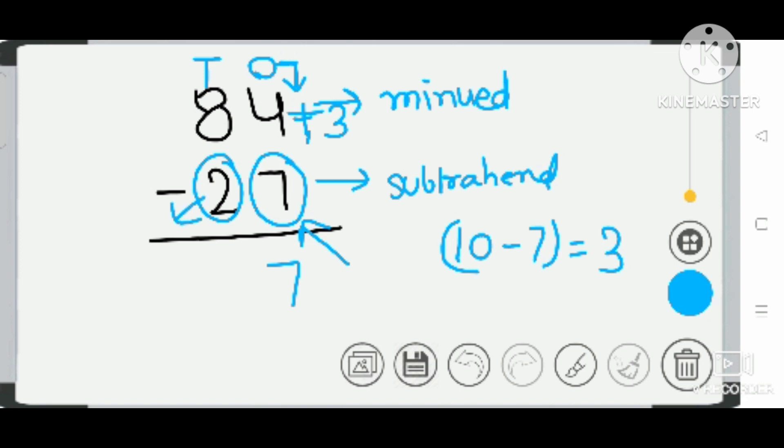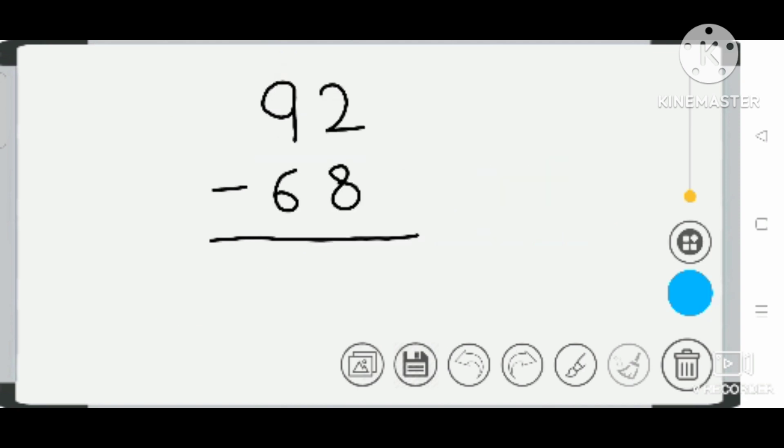You get your answer 57. Next example: 92 minus 68. This is one's place and this is ten's place. What you do is see the subtrahend of one's place